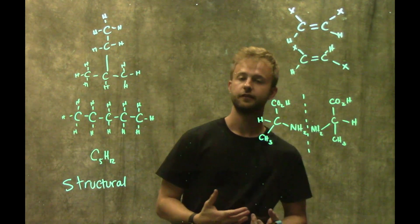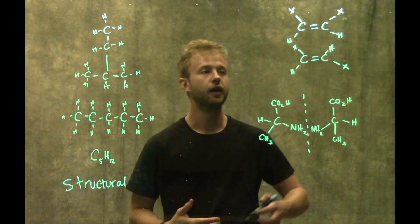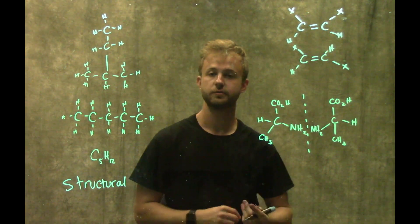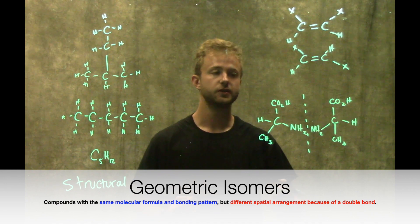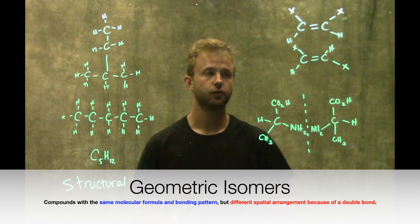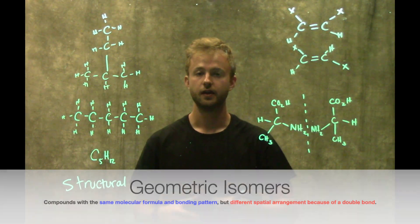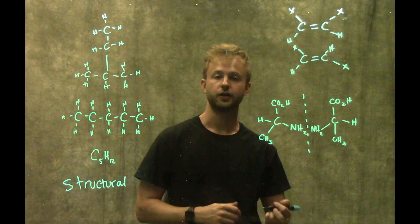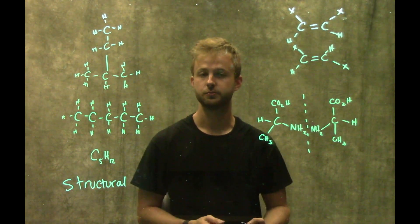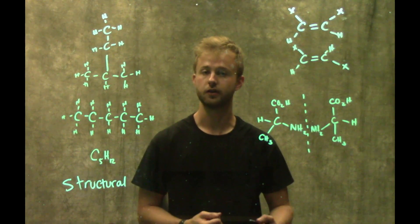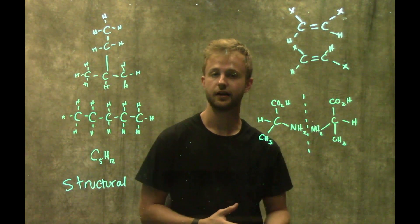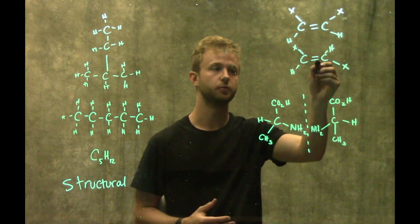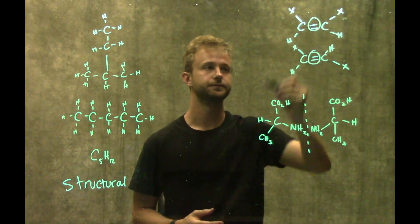Moving on to another kind of isomer, we're going to look at geometric isomers. Geometric isomers are going to be the same number of atoms of the same elements, but they're going to differ in their spatial arrangement within the two molecules. Typically geometric isomers arise because of the presence of a double bond, like you can see right here.